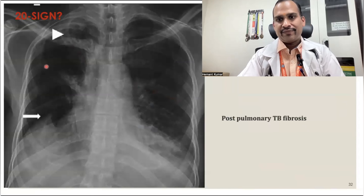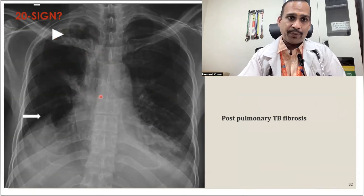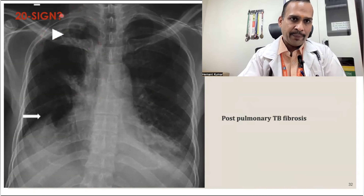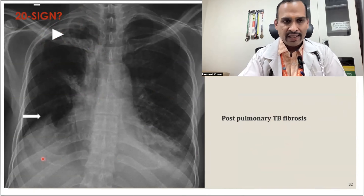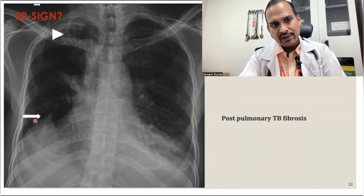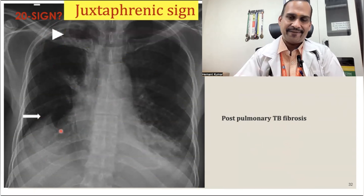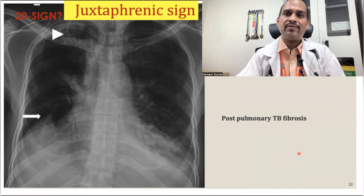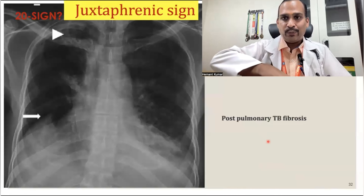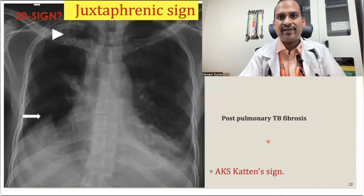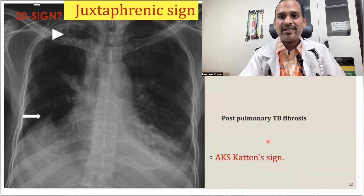Sign 20 is the juxtaphrenic sign, also known as Keten's sign. You can see fibrosis in the upper zone due to post-TB fibrosis, and because of this fibrosis there is traction of the diaphragm. There is pulling of the lung and diaphragm due to fibrosis. This sign is seen in post-TB fibrosis.